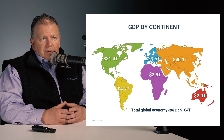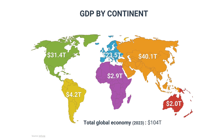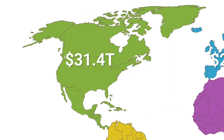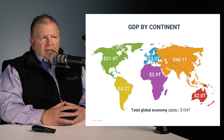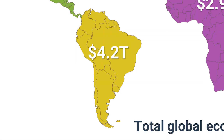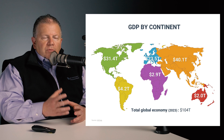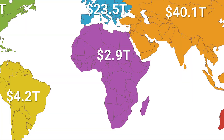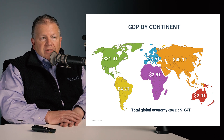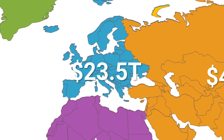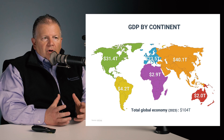First, we'll look at GDP by continent. You can see the bright colors for the different regions. In North America, you see $31.4 trillion, made up of the three largest countries in the area plus Central America and a lot of the island populations. As we move south to South America, the total for that continent is $4.2 trillion. Continuing to Africa, the purple area, $2.9 trillion for the giant continent of Africa. If we look at the European countries designated in blue, $23.5 trillion is the summation of their gross domestic products, all aggregated together.